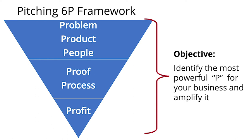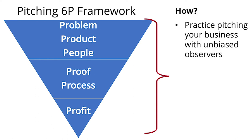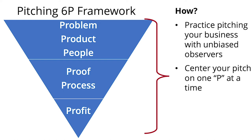The task is to take the P that's most powerful in your message and amplify that. Start with an unbiased observer and listener. For each of the different Ps, give it your best shot — what is really powerful about the product, the people, or the problem you're trying to solve? Try to build a foundation around that.